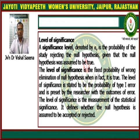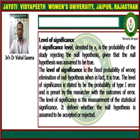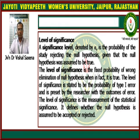The level of significance is the fixed probability of rejecting the null hypothesis when in fact it is true. It is stated to be the probability of Type 1 error, and is preset by the researcher with the outcomes of error. This is a very important point: the level of significance corresponds to Type 1 error, which is where the null hypothesis is assumed to be true but our test is rejecting it.